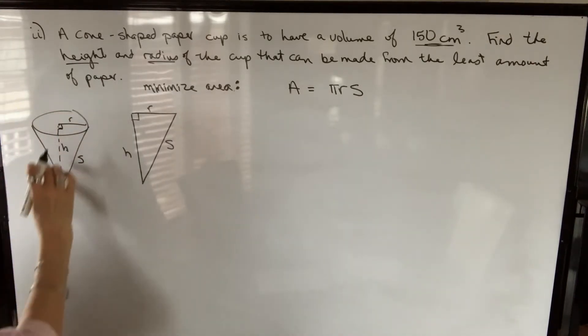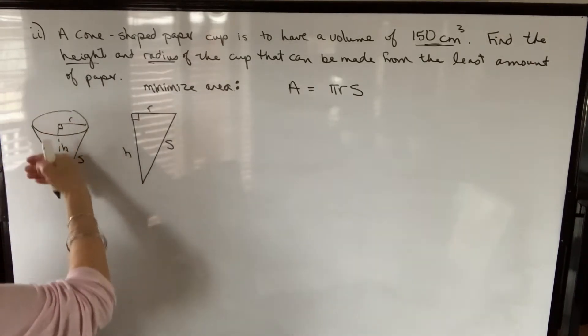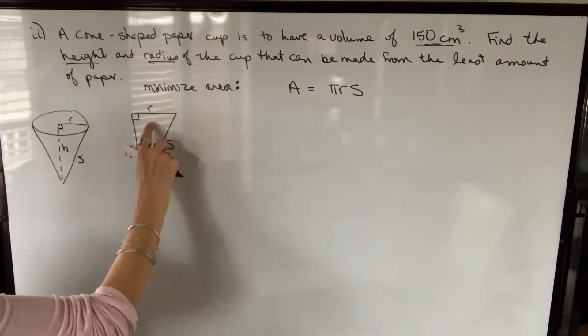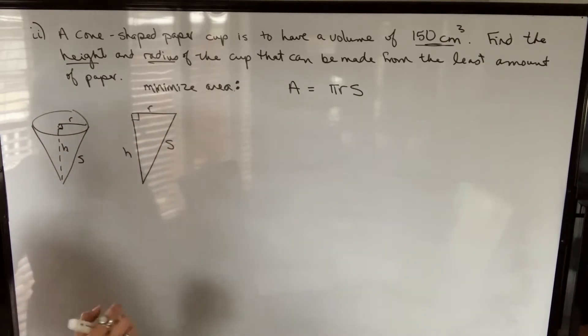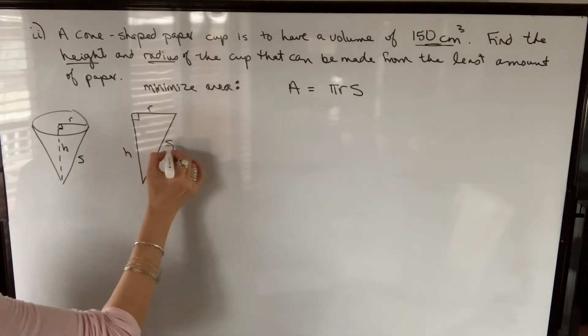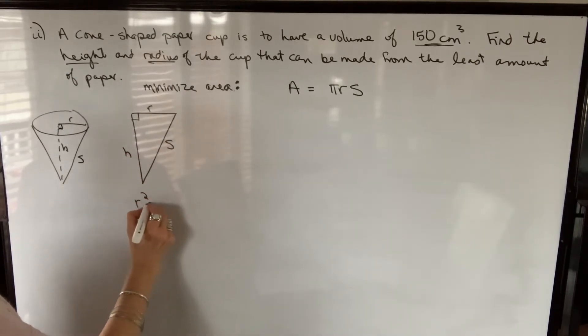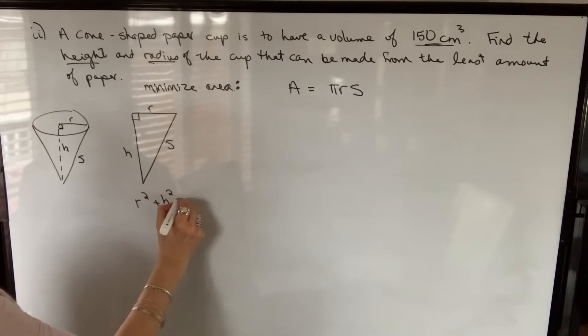So if we were to take a cross-sectional piece of this cone, we would get this right triangle. So we know the relationship between r, h and s is r squared plus h squared will equal s squared.